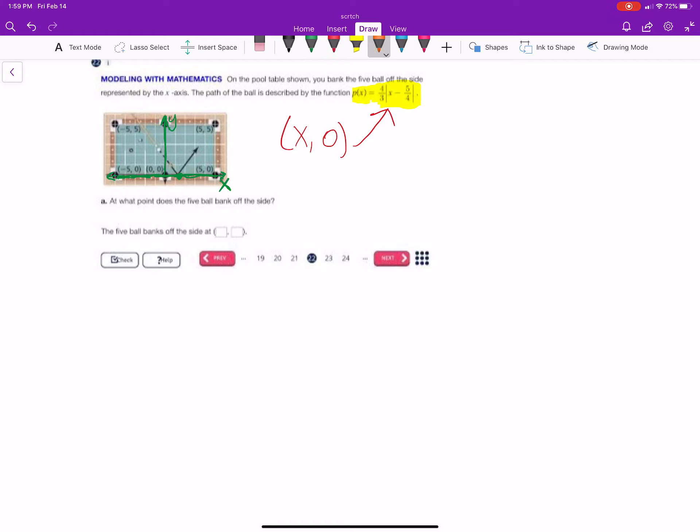So, what I mean by that is p of x, we can think of as being like our y, which is equal to 0. So, 4-thirds the absolute value of x minus 5-fourths is equal to 0. This is going to tell us, when we solve for x here, the x-value where y is 0. And that's where we hit that side.